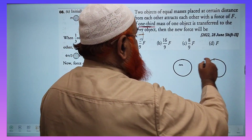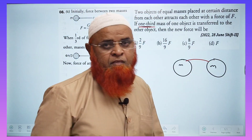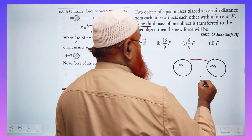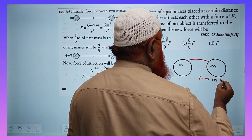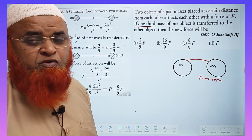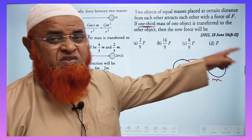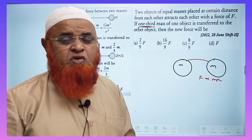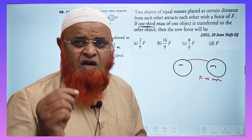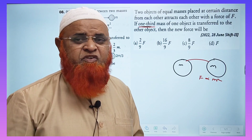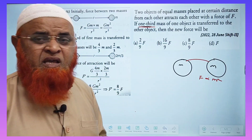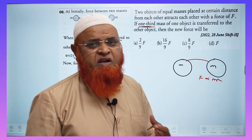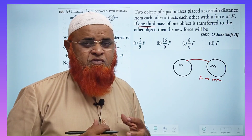Now, if one-third of the mass is transferred to the other side, what happens to the force? In the first case, we know that force is directly proportional to m squared. I'll teach you a shortcut method — not only for one-third, but if it is one-fifth, one-seventh, or one-eighth, whatever it may be, you can solve it using this shortcut.